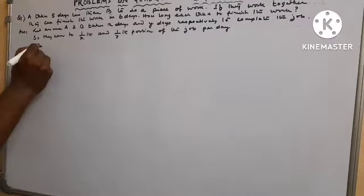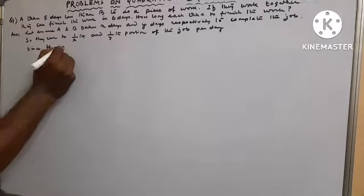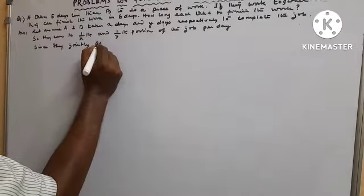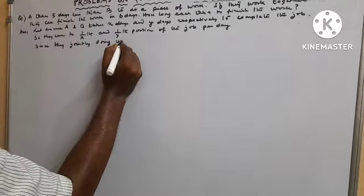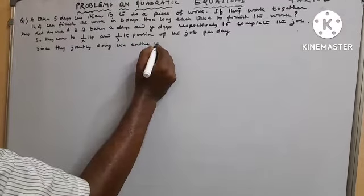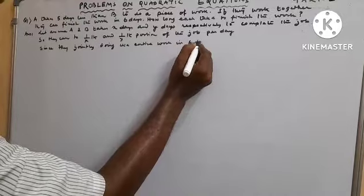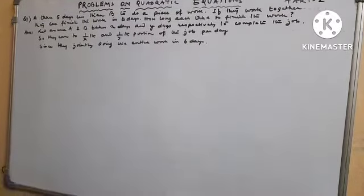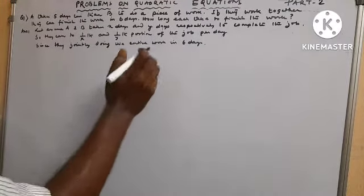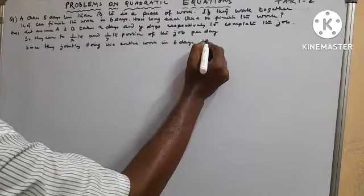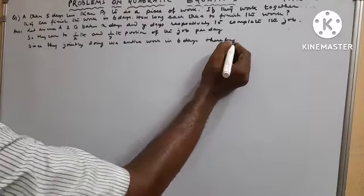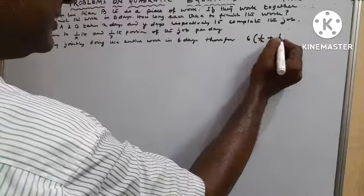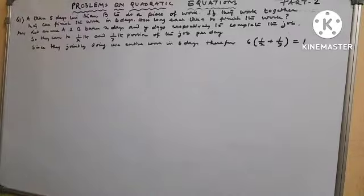Since A and B jointly finish the work in 6 days, together in one day they complete the entire work. Therefore the first equation is: 6 times (1/x + 1/y) equals 1.